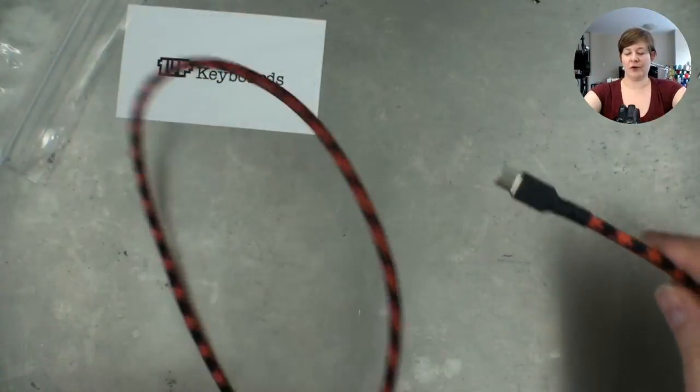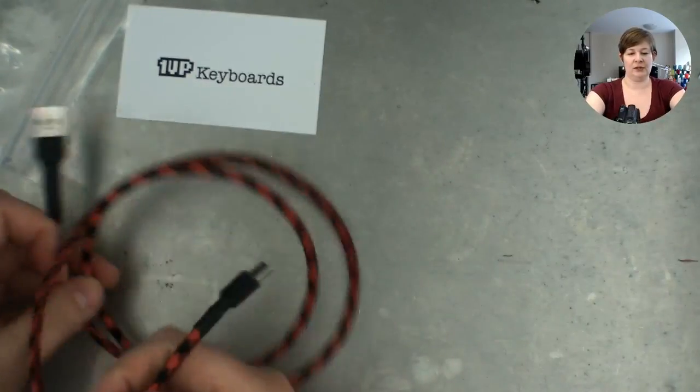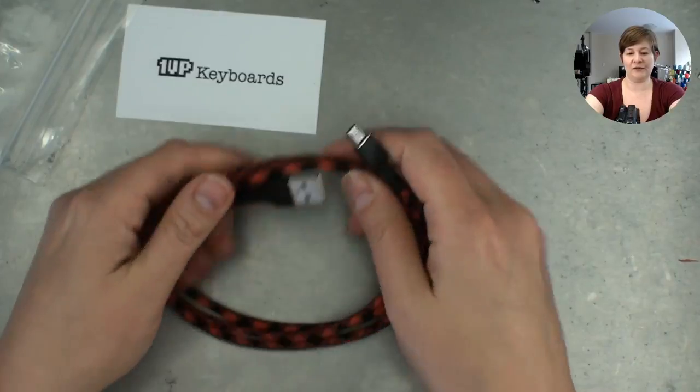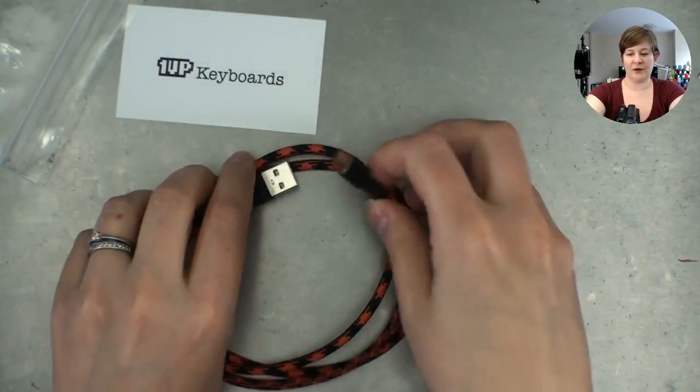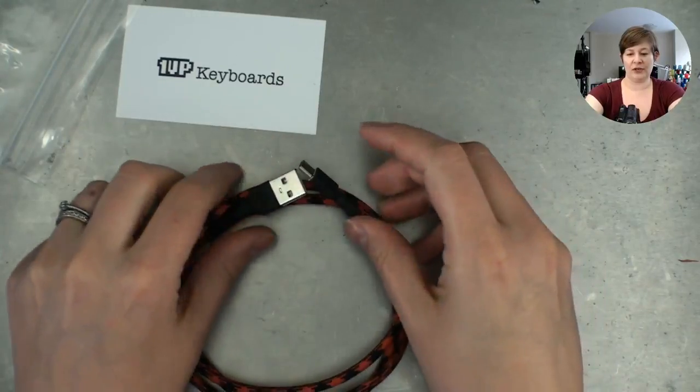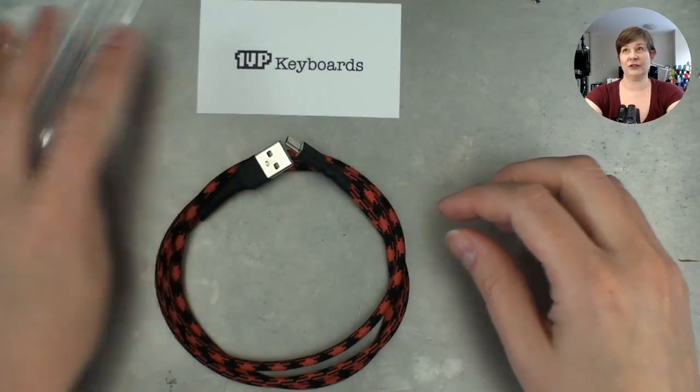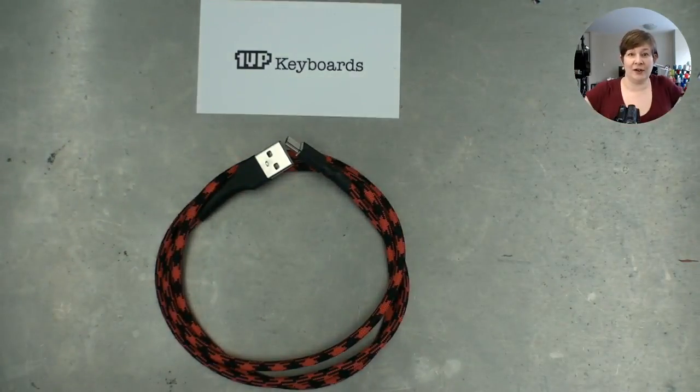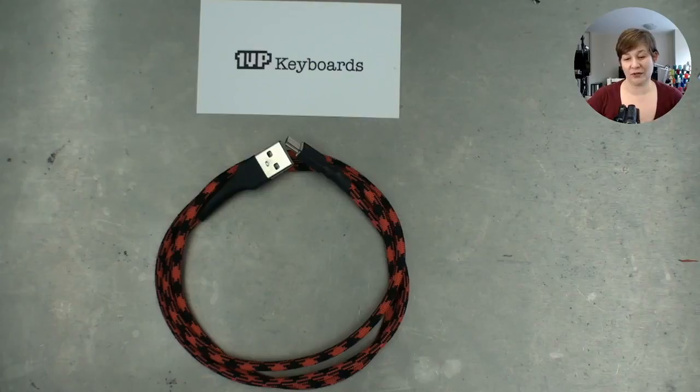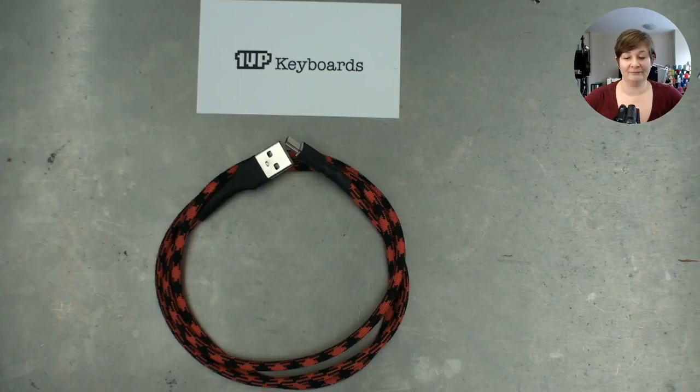There you go. You have your own homemade, made it yourself, picked out your colors, designed it yourself, DIY, no solder, just clipped together cable kit. All finished. One UP Keyboards. It's as easy as that. You've got a really cool cable that you can charge your phone, you can connect to your laptop, you can connect your keyboard, depending on whether you want micro or mini. And you're all set to go.